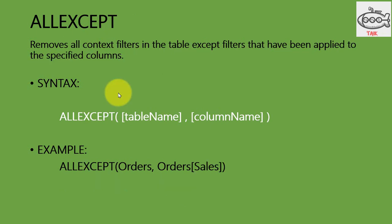The next is ALLEXCEPT. It removes all context filters in a table except filters that have been applied to the specified column. The syntax is ALLEXCEPT, TableName, ColumnName. For example, ALLEXCEPT(Orders, Orders[Sales]) — whatever filters you have applied on this table, it will remove all of them except for the filter on the Sales column.